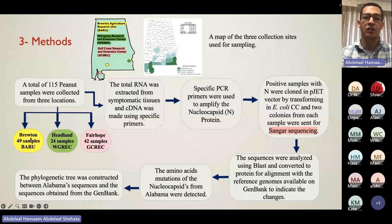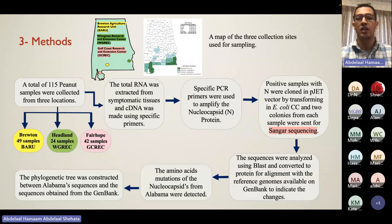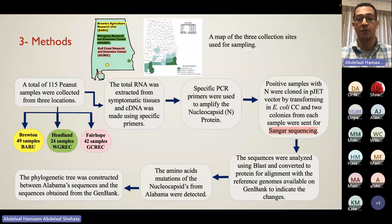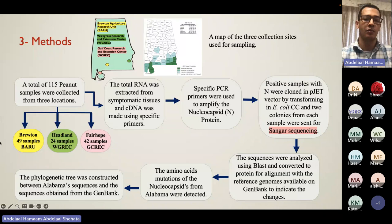Samples were carried to the lab, total RNA was extracted, and cDNA was made using specific primers. The nucleocapsid was then amplified using specific primers, and positive samples were cloned into pGEM-T. We sent two different plasmid colonies from each sample for sequencing to ensure we got at least one complete nucleocapsid sequence per sample. The sequences were analyzed using BLAST, converted to protein, and aligned to detect changes in the nucleocapsid genome.